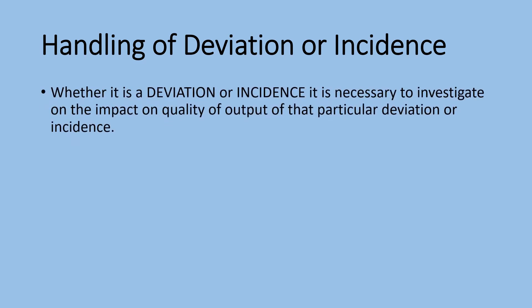How do you handle the deviation or incidence? Whether it is a deviation or incidence, it is necessary to investigate the impact on quality of output of that particular deviation or incidence. Generally, an incident will not lead to a significant impact on the output, because the incident happens by accident and the activity is corrected immediately before moving forward. The investigation may be carried out as per the OOS investigation guidelines of CDER — that means the Center for Drug Evaluation and Research — which really provides a lot of guidance to industry on various aspects.